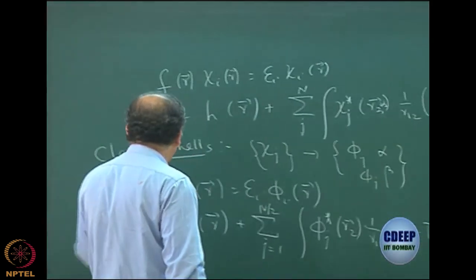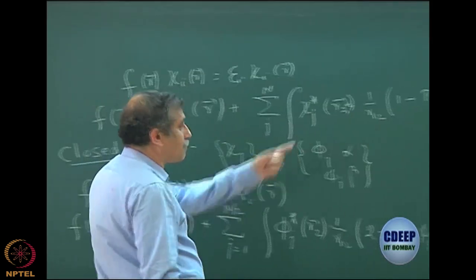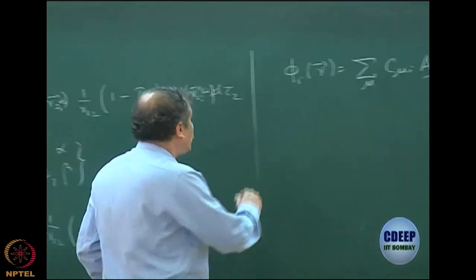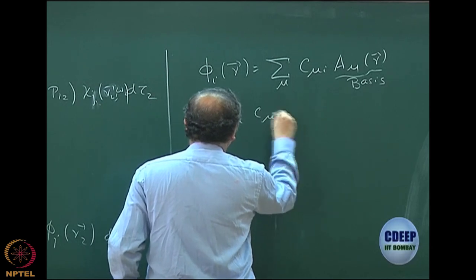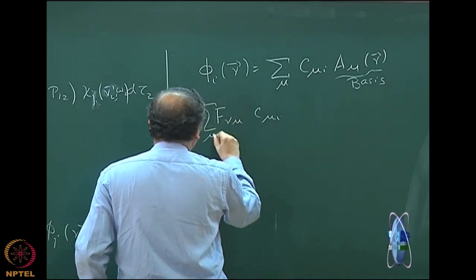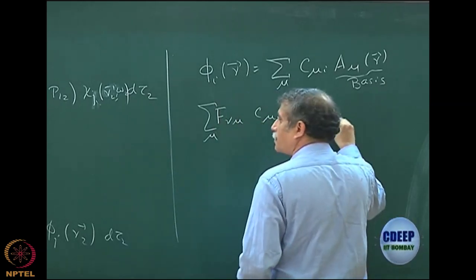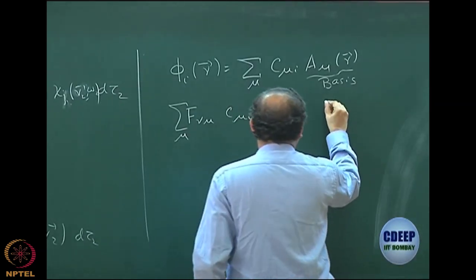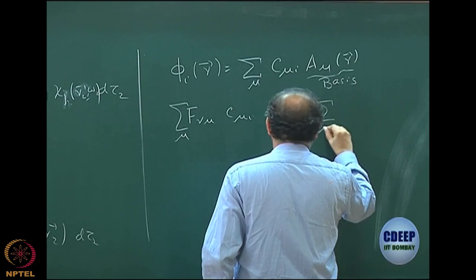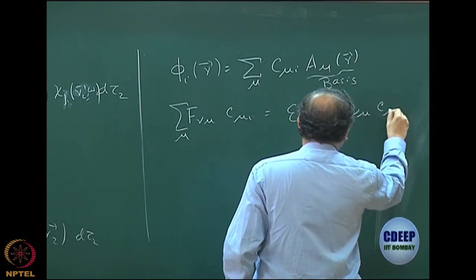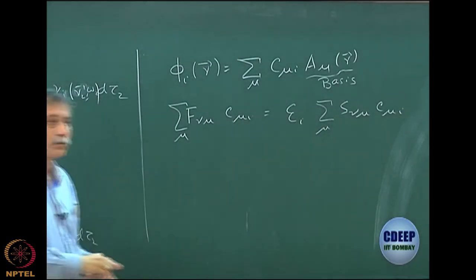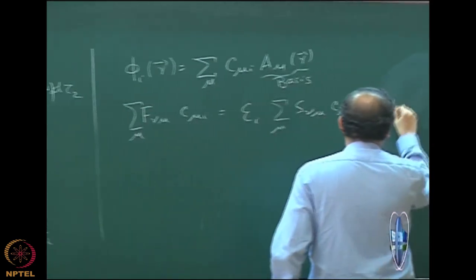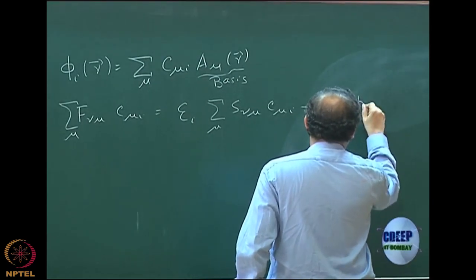By projecting — by expanding this equation and then projecting onto different a_mu — we wrote the equation which is F*C = S*C*epsilon, summed over mu. That is your Hartree-Fock-Roothaan equation.